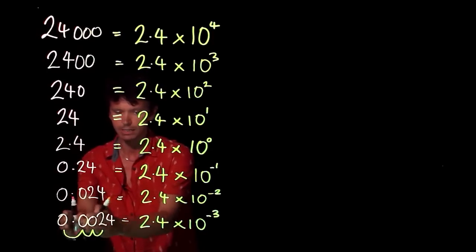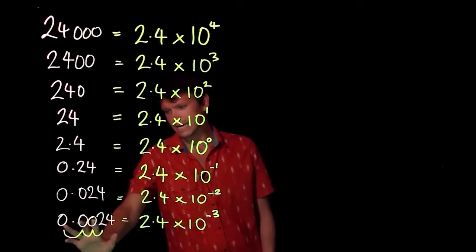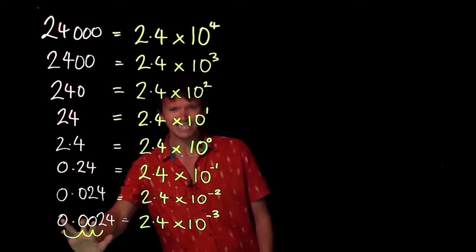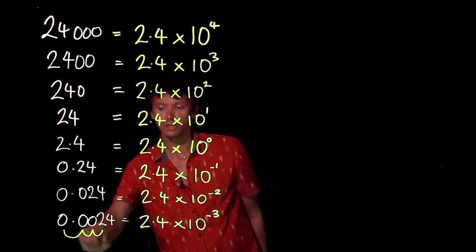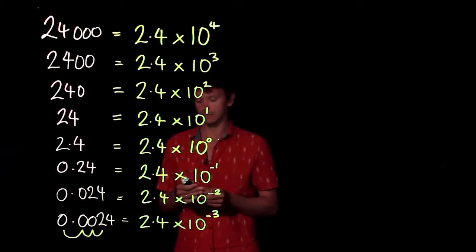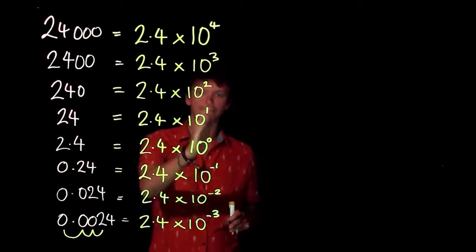Interestingly, you'll notice that the 3 always corresponds to the fact that you've got three zeros there before your first non-zero digit, including the one before the decimal point. So this is putting numbers into standard form.